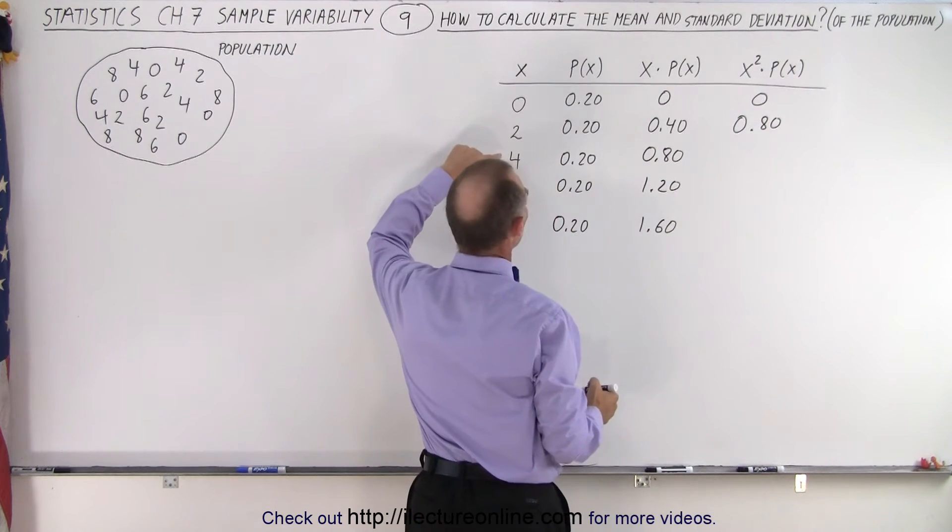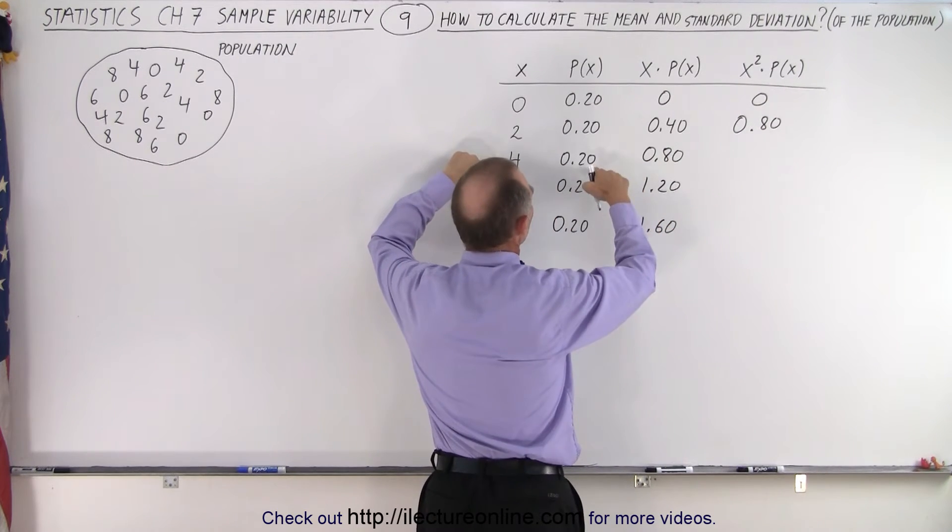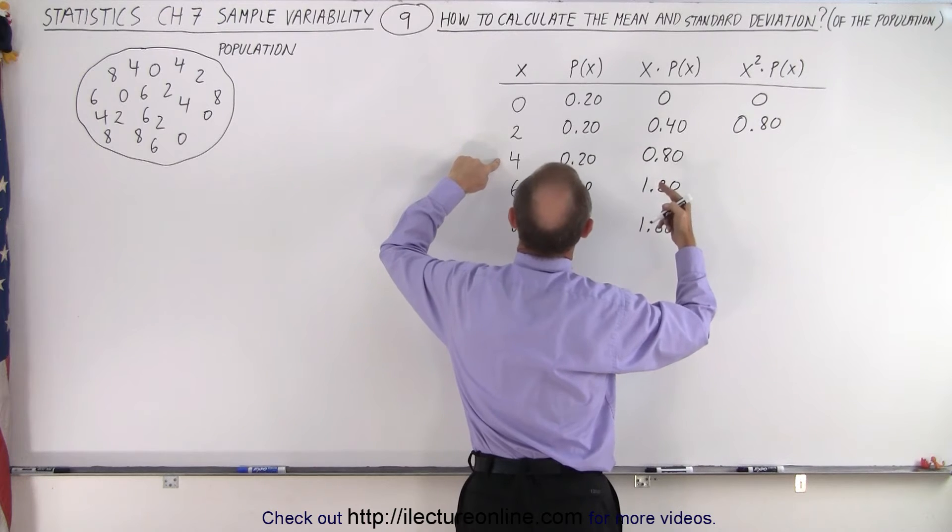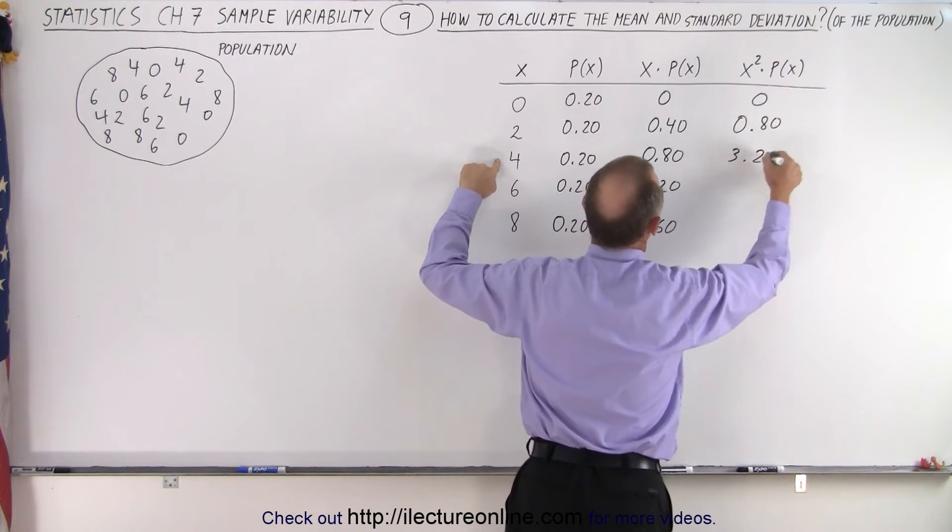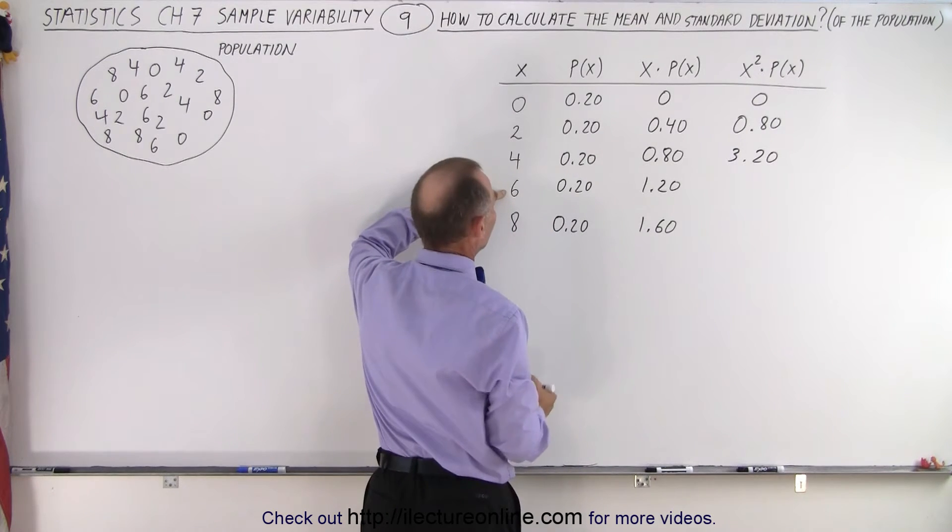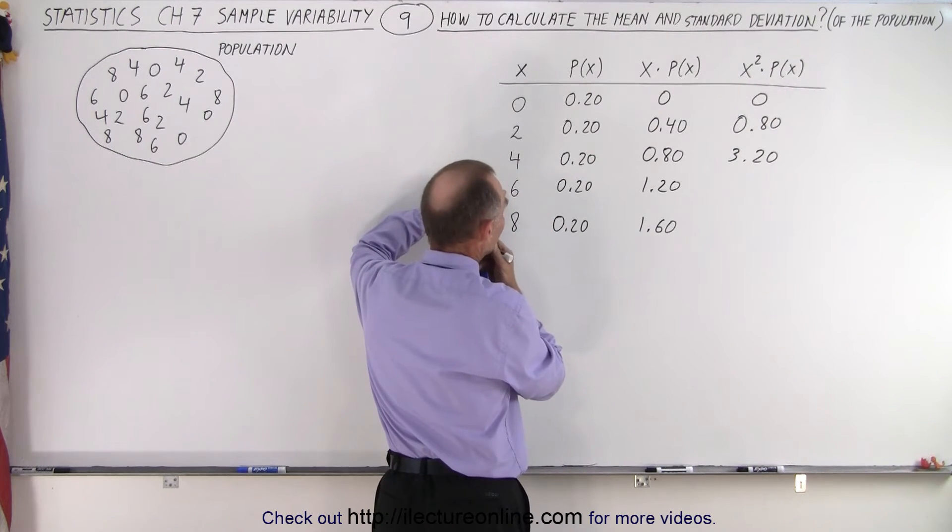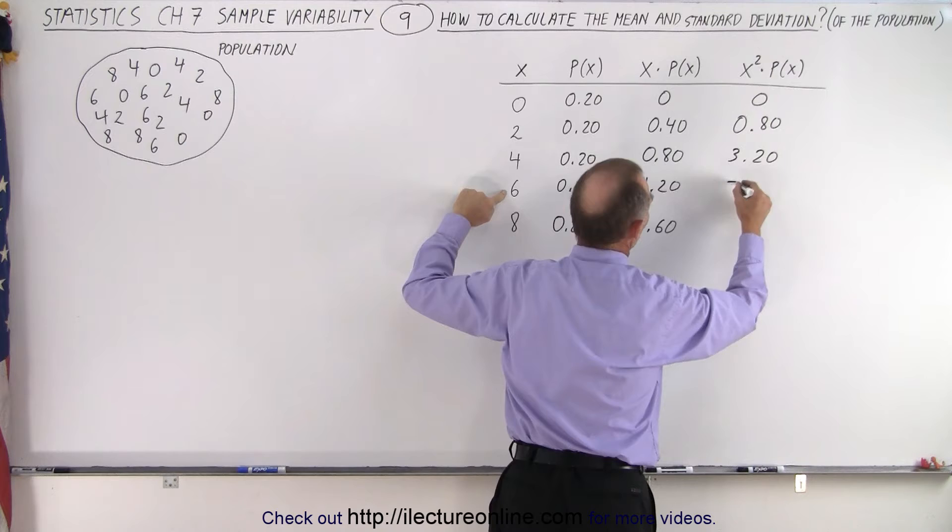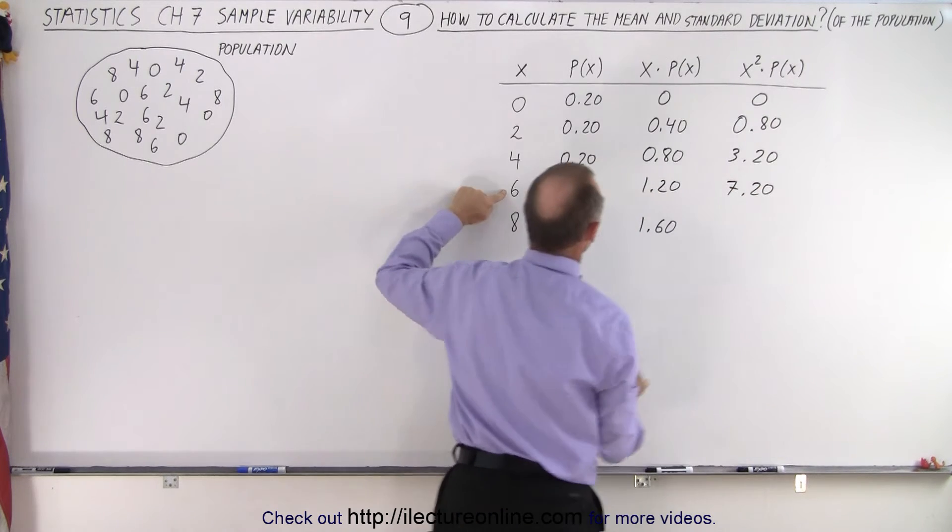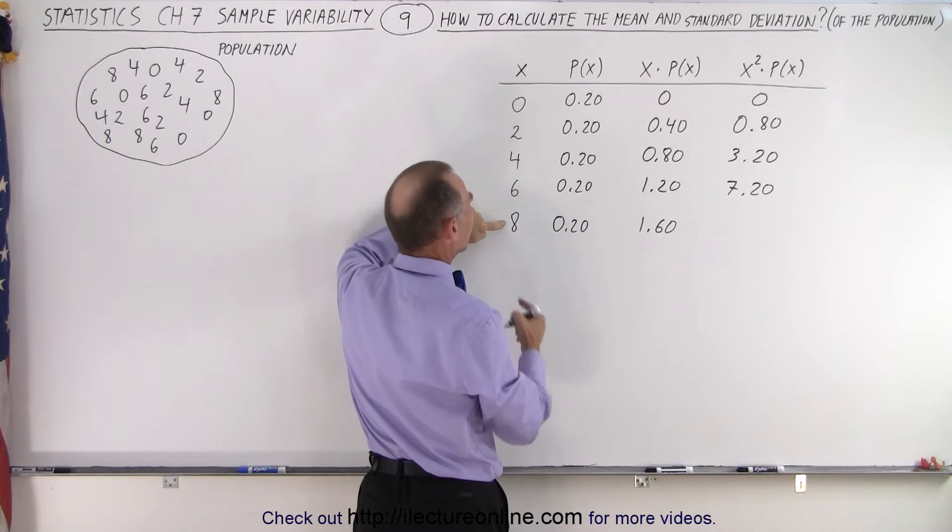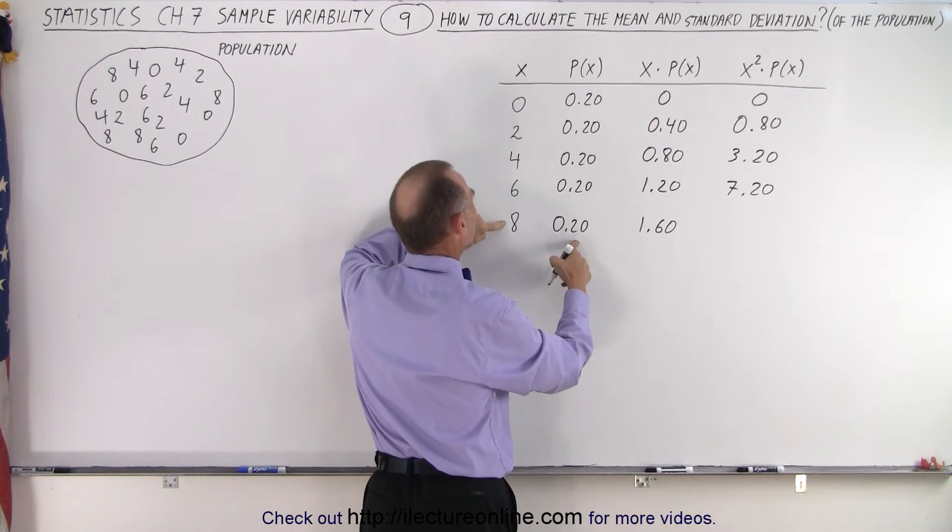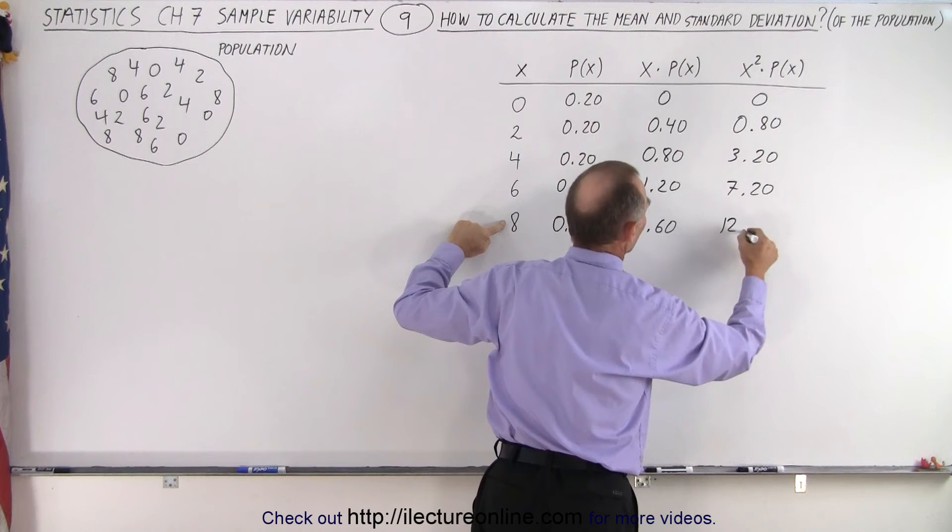Then here we have 4 squared times this. That gives us 4 squared, that's 16 times this, that gives us 3.20. Here this is 6 squared, that's 36 times 2, that would be 7.20. And 16. Wow, okay. And then this squared is 64 times that, that would be 128 or 12.80.